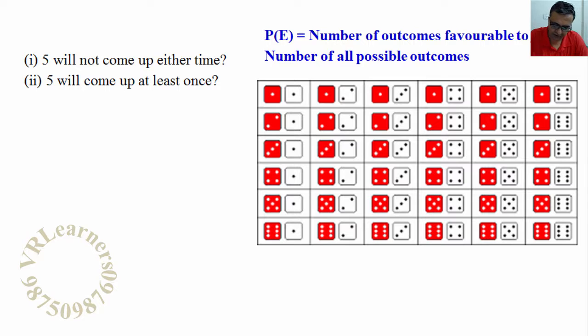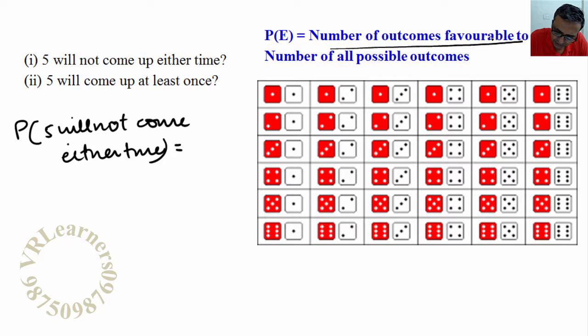Now I'll solve this question: 5 will not come either time. So I said probability of 5 will not come either time equals number of outcomes favorable to the event. How many? 25. Total number of possible outcomes? 36.